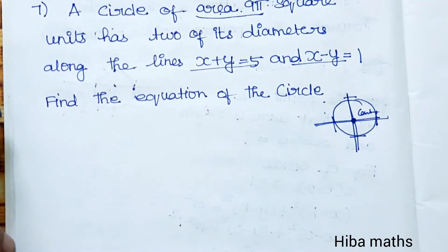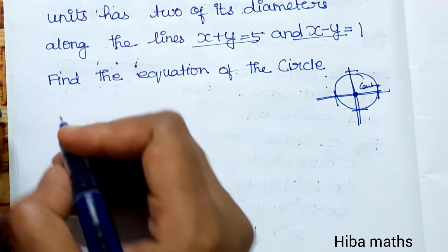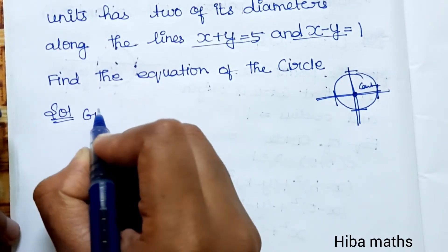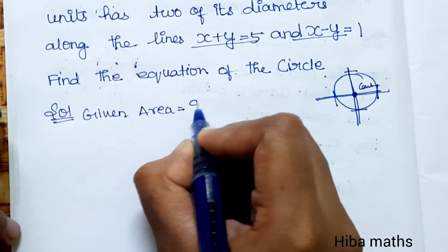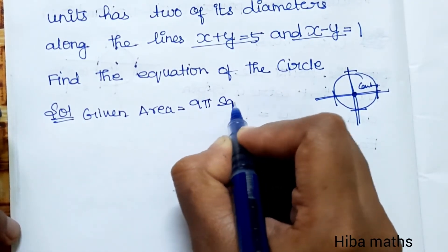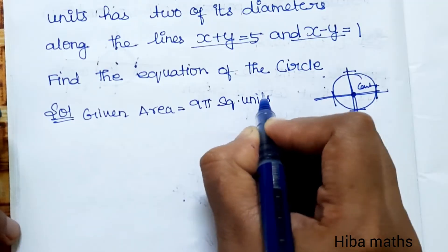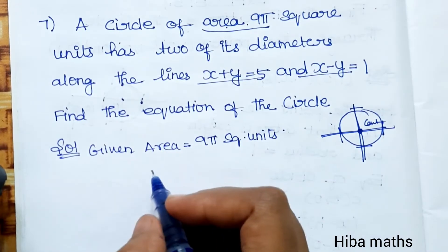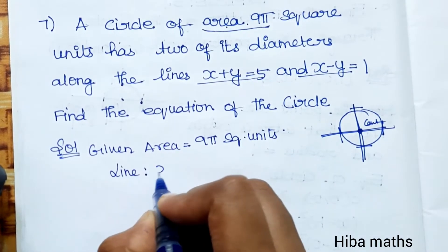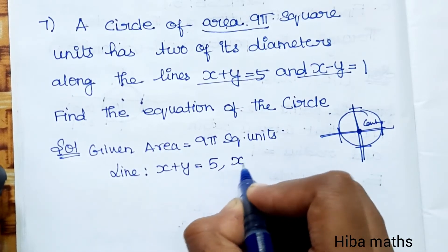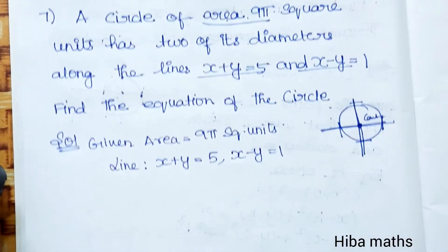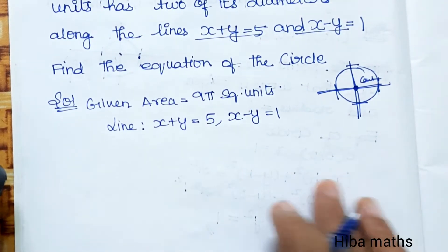Let's solve this. Given the area is 9π square units, and we have two lines: x+y=5 and x-y=1. These are the two equations for the diameters.